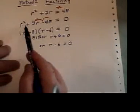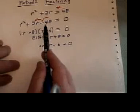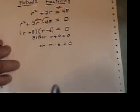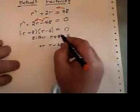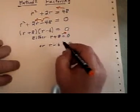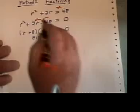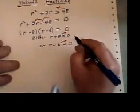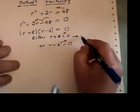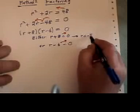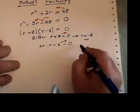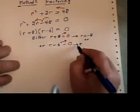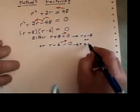So what I have done is taken a difficult equation, with lots of r's in them, and broken it down into two very simple equations. All I have to do is take 8 to the other side here, and negative 6 to the other side here, and out pops my two answers. r equals negative 8, or r equals positive 6.